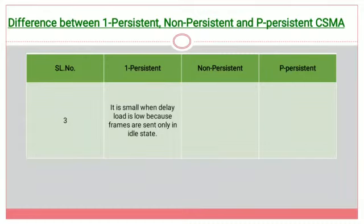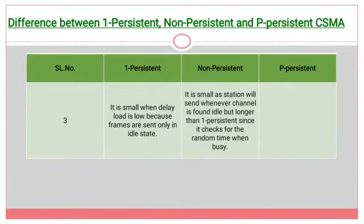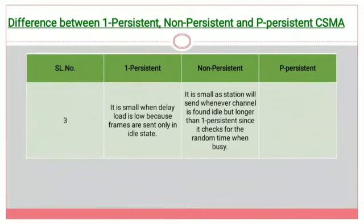When the delay load is low, one persistent has a small delay because frames are sent only in the idle state. In non persistent, the delay is also small since the station sends whenever the channel is found idle, but it is longer than one persistent because it checks after a random time when busy. Once it identifies the channel as busy, it waits for a random amount of time before sensing again.